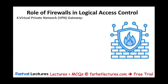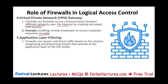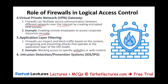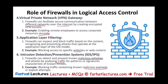Firewalls can also be used as a VPN — a virtual private network — which allows secure communication between different networks over the internet by creating encrypted VPN tunnels. For example, enabling an employee to access corporate resources securely. Additionally, firewalls can perform application layer filtering, inspecting and blocking traffic based on content, recognizing and preventing attacks that operate at the application layer. An example would be blocking access to specific websites or web content.